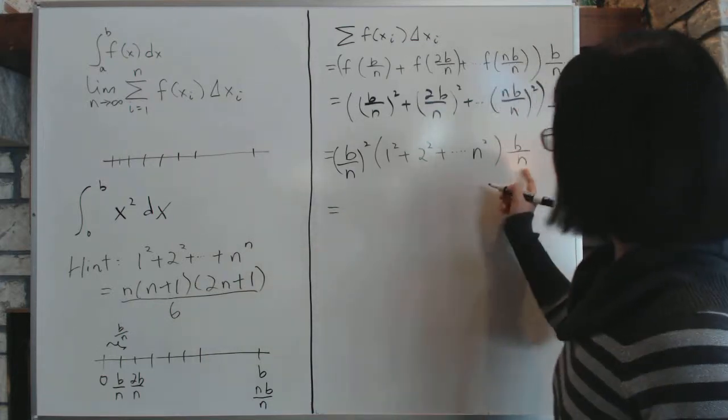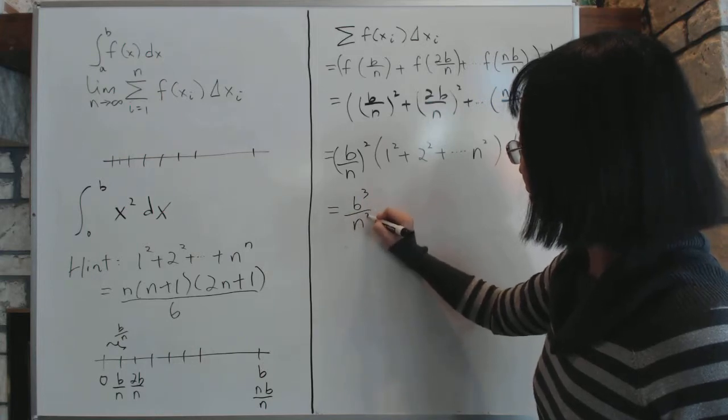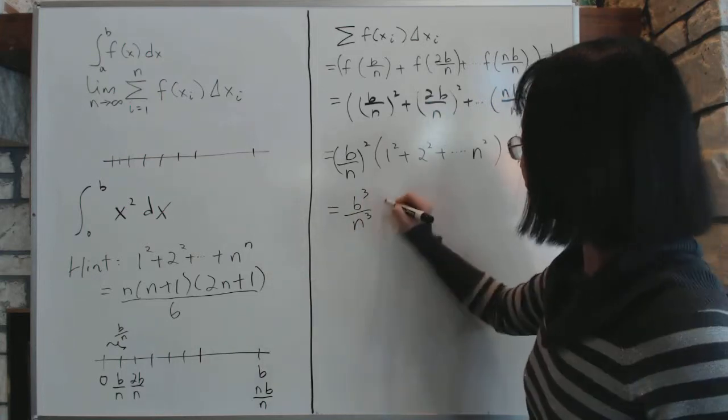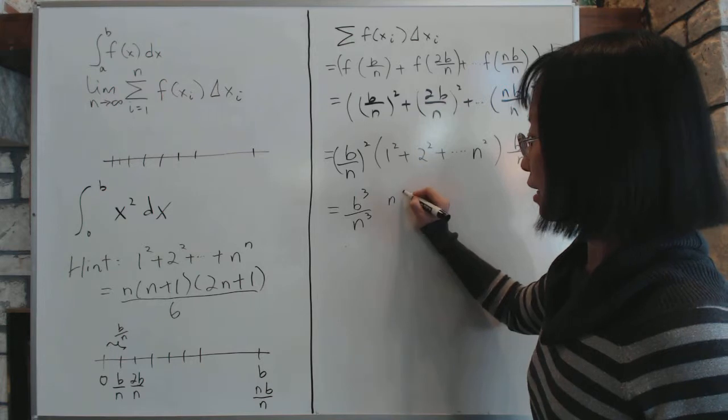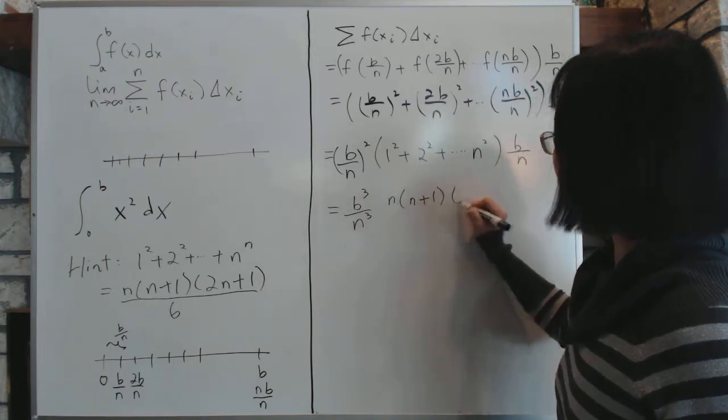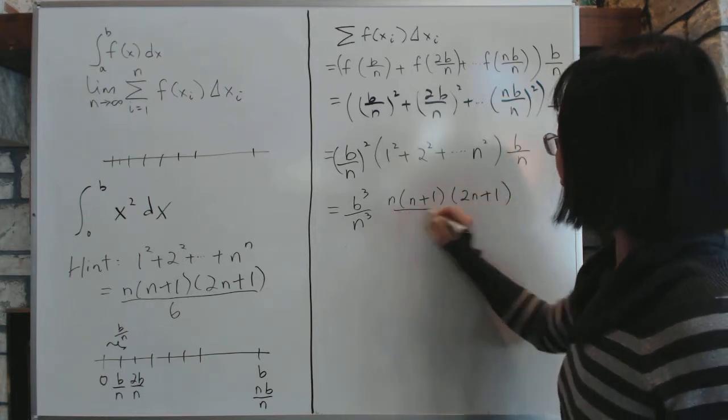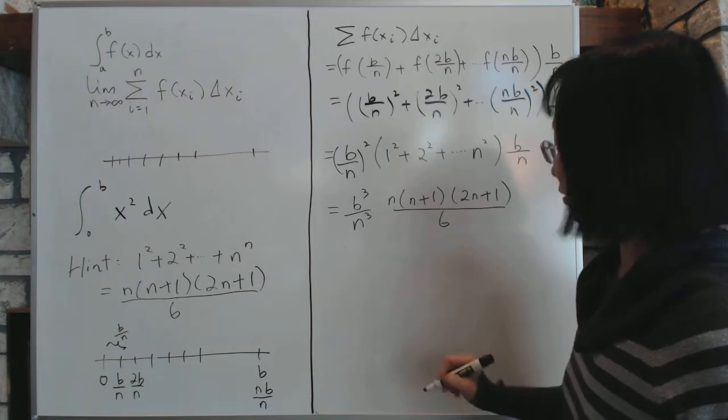And so we'll plug that in. So together is b cubed over n cubed times this stuff, which is n times (n plus 1) times (2n plus 1) divided by 6. Okay.